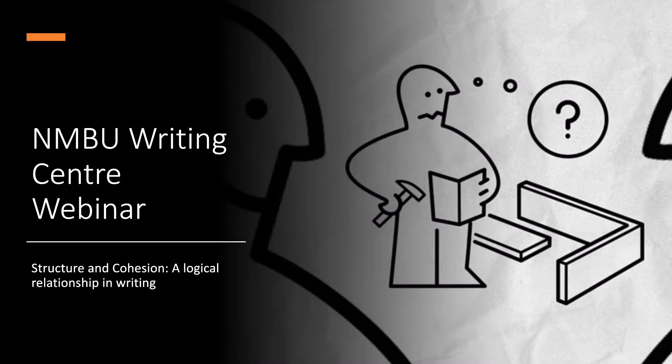When it comes to scientific and academic writing, there is a logical relationship between the structure of our writing and the cohesion of our ideas. In this condensed webinar presentation, we're going to walk through that relationship to help you become a better scientific and academic writer.